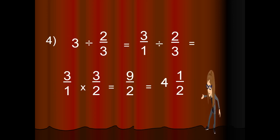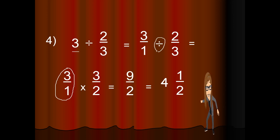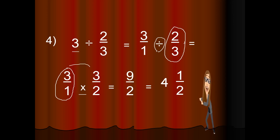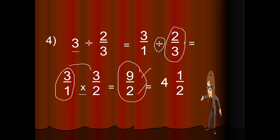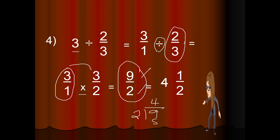Next, we have 3 divided by 2 over 3. You rename 3 as 3 over 1, keep 3 over 1, change the sign of division to multiplication, get the reciprocal of 2 over 3 which is 3 over 2. Proceed to multiplication: 3 times 3 is 9, and 1 times 2 is 2. Then simplify — the answer is 4 and 1 half. 9 divided by 2 is 4, 4 times 2 is 8, and 9 minus 8 is 1. So the answer is correct.